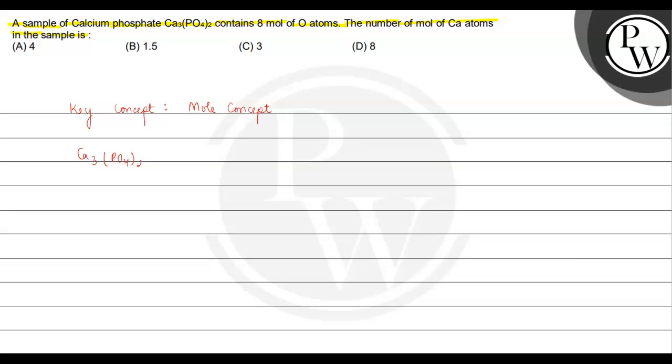We will say that calcium phosphate Ca3(PO4)2, calcium phosphate is given. Now calcium phosphate, there are 3 elements present in calcium phosphate Ca3(PO4)2, and those 3 elements are calcium, phosphorus, and oxygen.